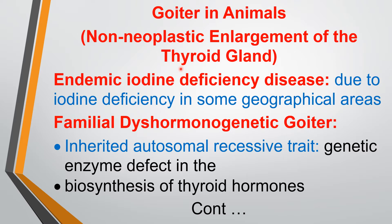There are some etiologies which give the name to the goiter. The first is endemic iodine deficiency disease, due to iodine deficiency in certain geographical areas. In India, it is the sub-Himalayan region. The number of cases constantly occurring in a particular geographical area due to iodine deficiency gives it the name endemic iodine deficiency disease.